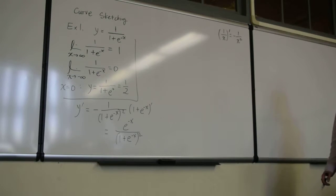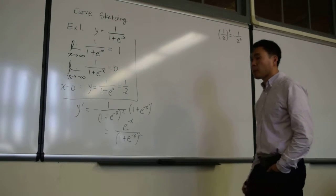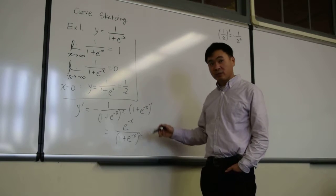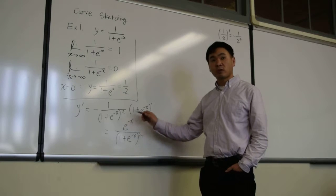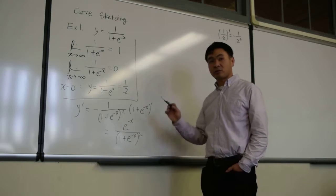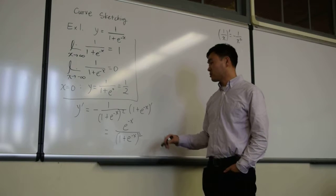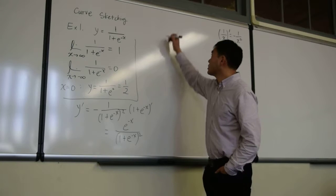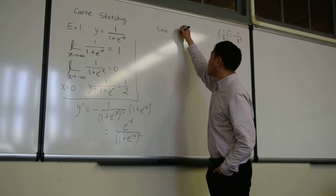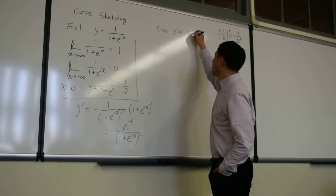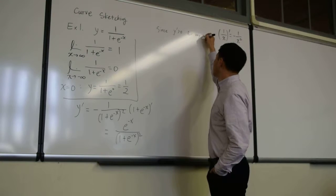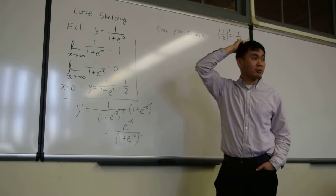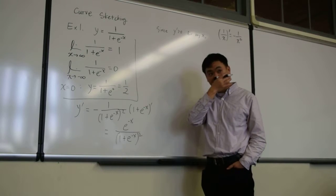That's the derivative. Now, do you see that this is always positive? Exponential functions are always positive, and anything squared is again positive. So this is always positive. Since y prime is positive for any x, what's the conclusion?